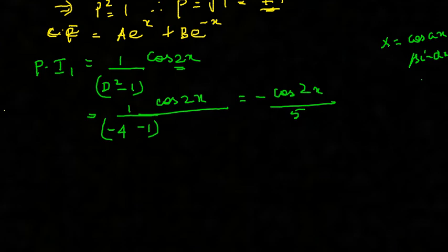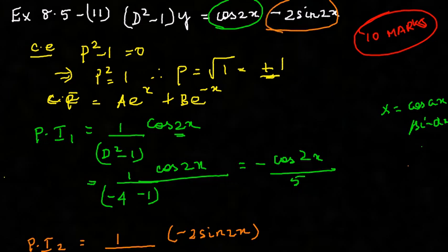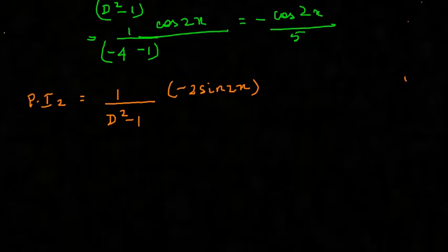Now let's go with particular integral number 2. So for particular integral 2, it is 1/(D² - 1) into minus 2 sin 2x. That's what we have here. Yes, minus 2 sin 2x. So again replace D² with minus a².